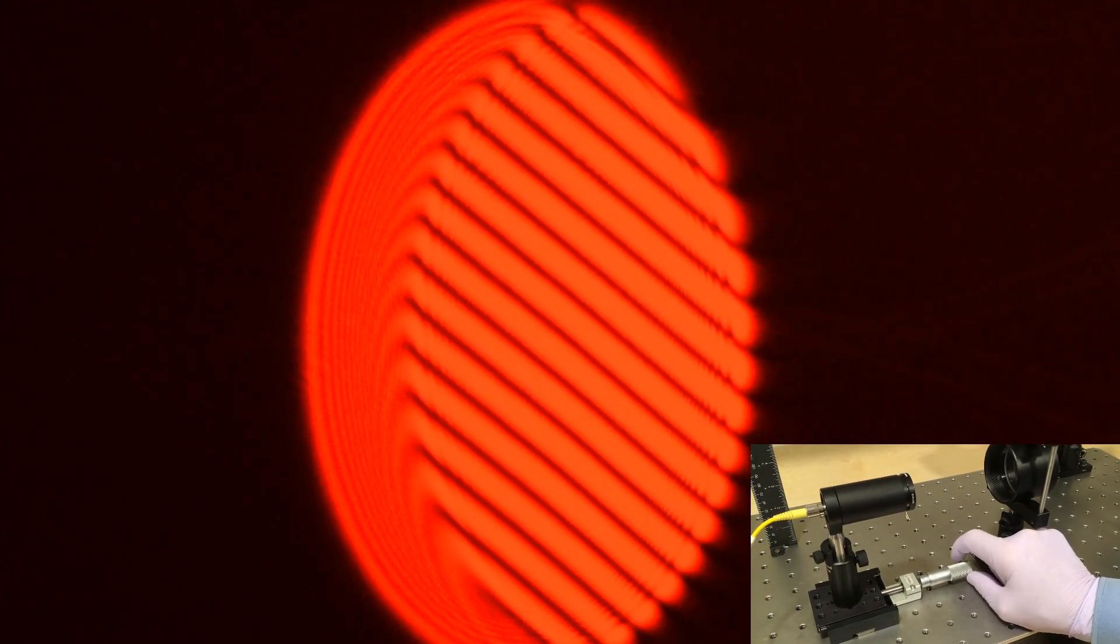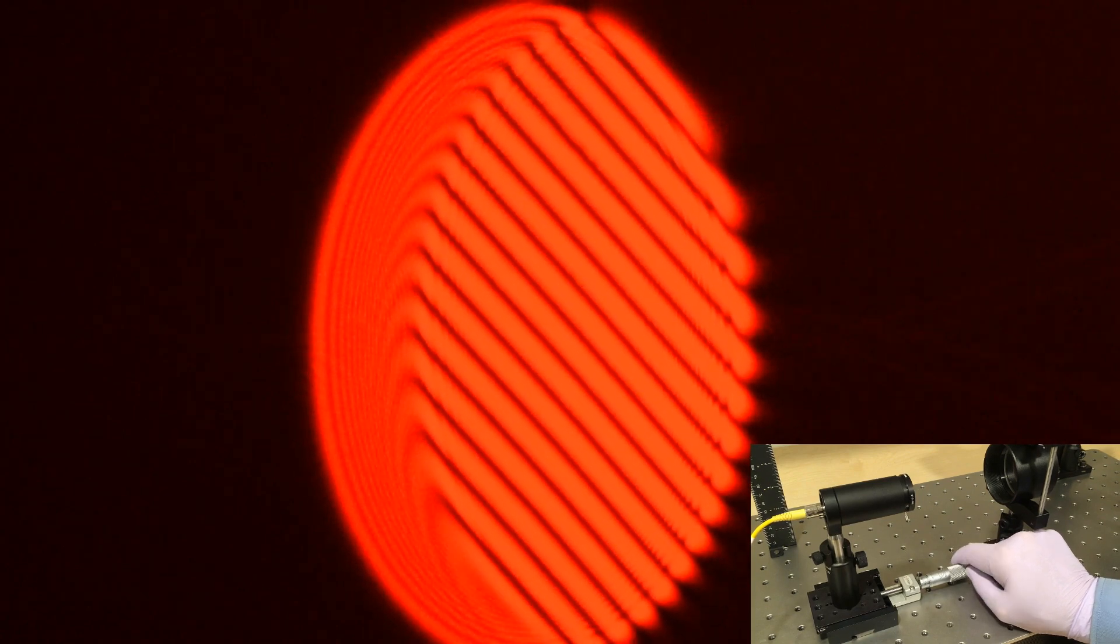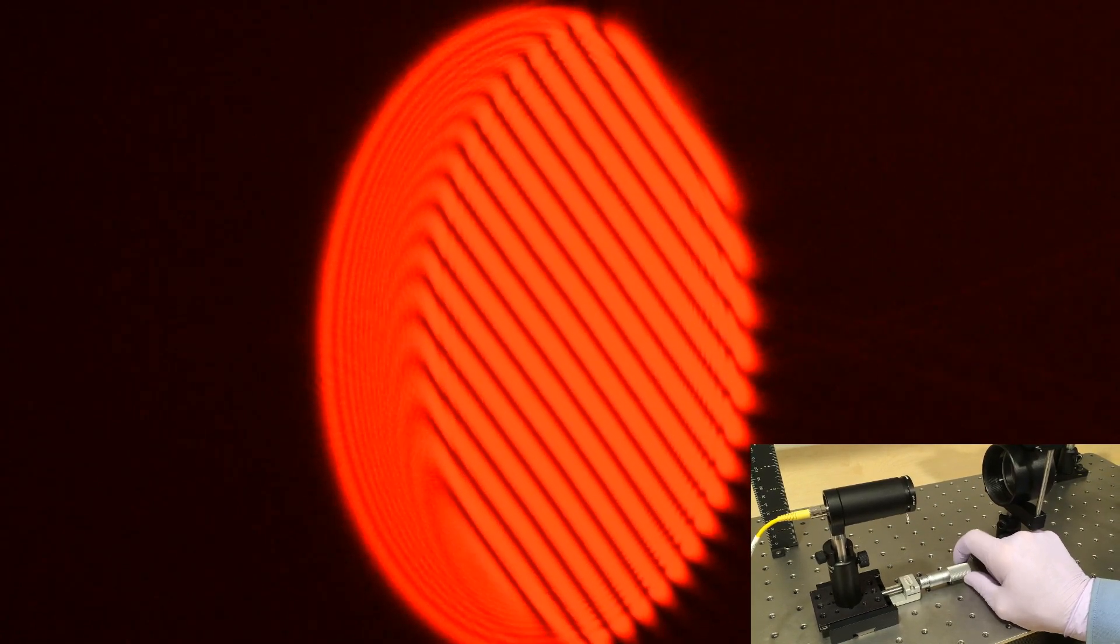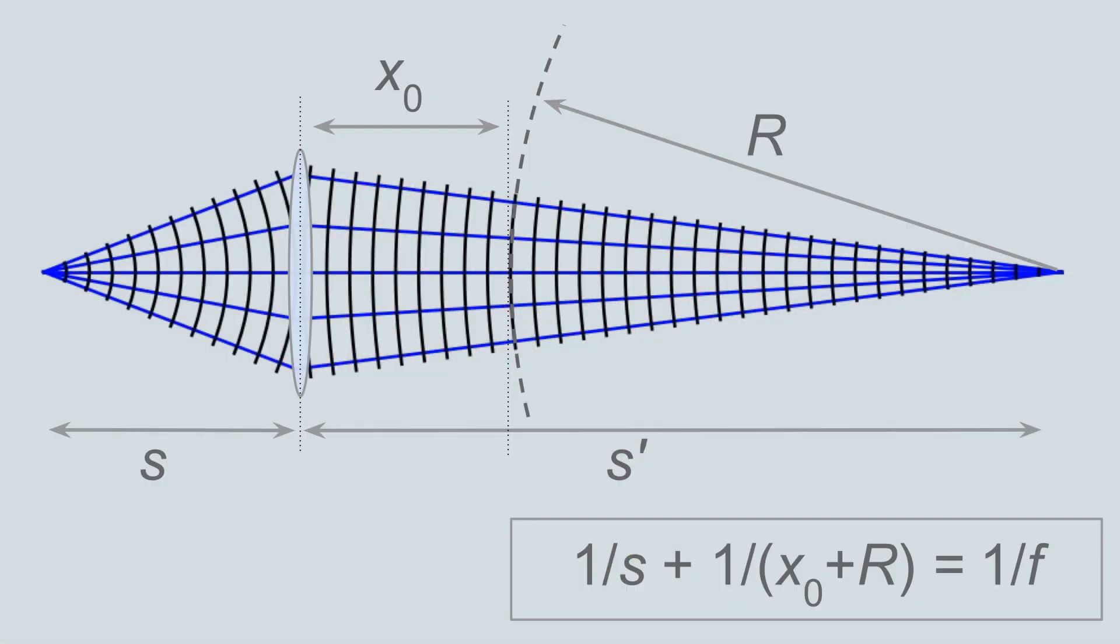If we record the fringes as a function of object distance and measure their angles, we can find more precisely where they are horizontal. Moreover, since we can measure the radius of curvature from the fringe angle, we can derive the focal length of the lens and the flatness of the outgoing wavefront.